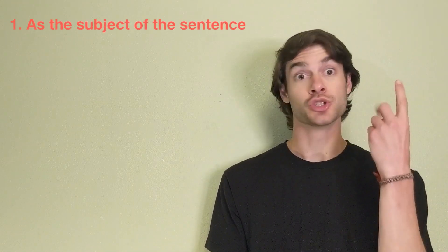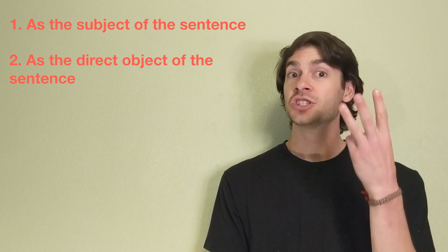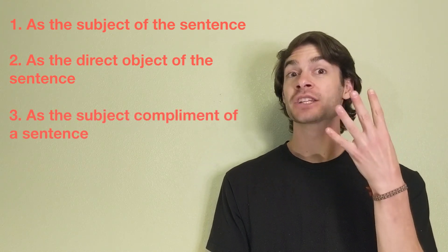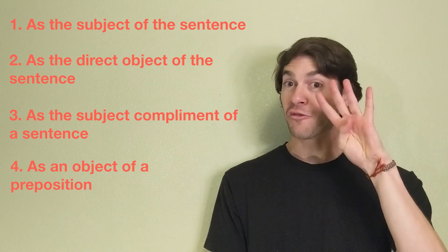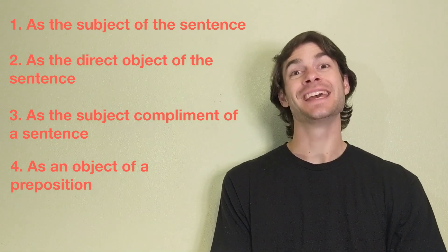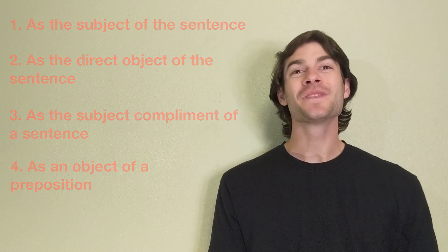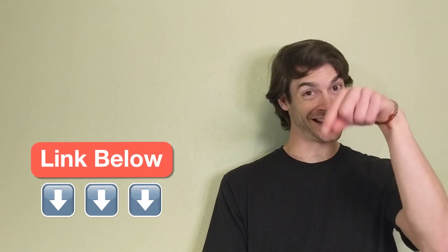These four examples, subject, direct object, subject complement, and object of a preposition are the four main ways in which we use a gerund. I hope this lesson helps you to recognize and use gerunds in the future. Thank you for listening. I can be found on Cambly both mornings and nights most days. If you would like to book a class with me, please follow the link in the description. I hope to see you in the classroom!